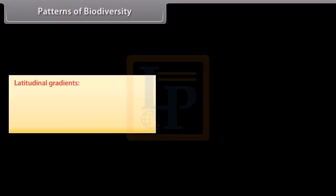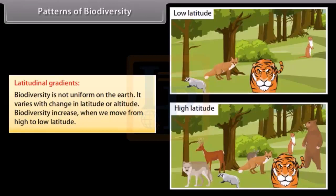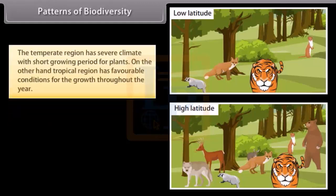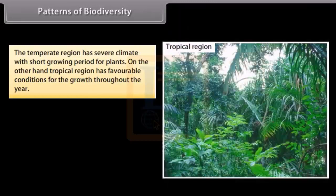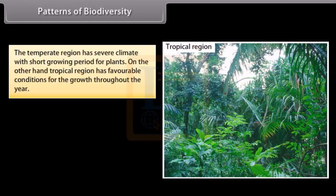Patterns of Biodiversity. Latitudinal Gradients. Biodiversity is not uniform on the earth. It varies with change in latitude or altitude. Biodiversity increase when we move from high to low latitude. The temperate region has severe climate with short growing period for plants. On the other hand,